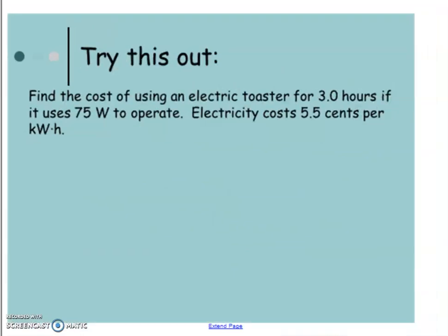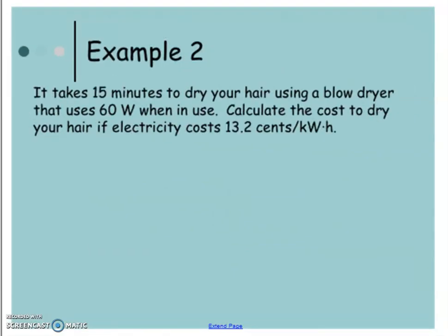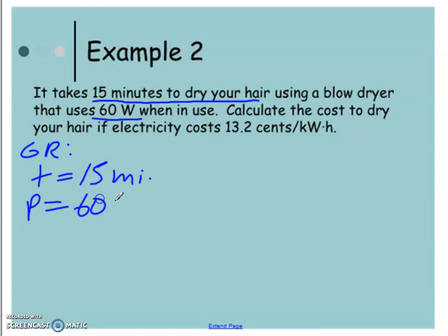Okay, so we'll do one more together, and then I'll have you try one out. So it says here, it takes 15 minutes to dry your hair. All right, let's get going. So the time we have is 15 minutes, 15 minutes to dry your hair with a blow dryer that uses 60 watts. So the power is 60 watts.